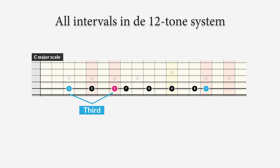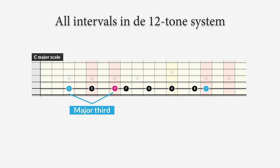We can do this for every interval. The third is the distance between C and E — two whole steps. But there's also a third between C and E-flat, with one and a half steps, which sounds minor. Both are thirds, but we call C to E-flat a minor third, and C to E a major third. The minor one is undoubtedly minor, and the other clearly has a major sound.